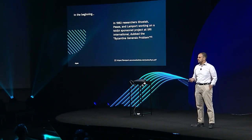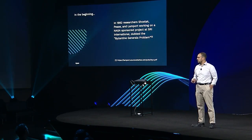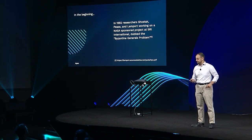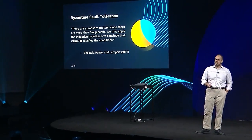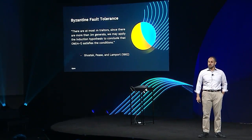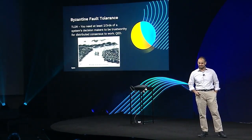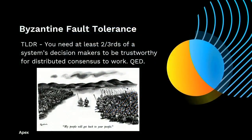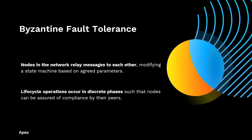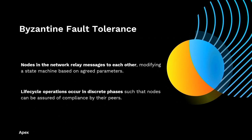In 1982, researchers working at SRI International on a NASA-sponsored project dubbed this the Byzantine Generals Problem. This was used to model systems engaged in distributed consensus. To quote from the white paper: you need at least two-thirds of the decision makers in a system for distributed consensus to be trustworthy. Nodes in the network relay messages to each other implementing Byzantine consensus, and these are used to modify a state machine based upon agreed parameters. Lifecycle operations occur in discrete phases such that nodes can be assured of compliance by their peers.